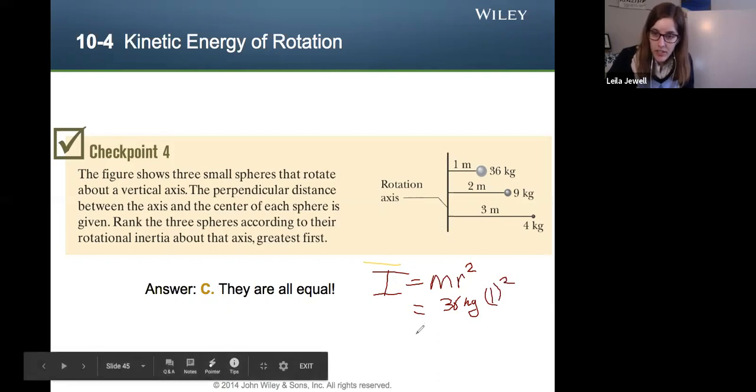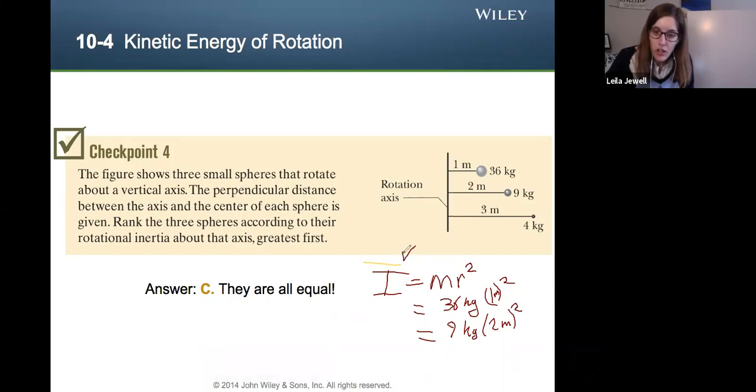We could do the same for the second and third cases. The second case is 9 kilograms times the two meters squared. And then when the two meters is squared, that becomes four meters squared times nine. That's again 36 kilograms times, I should add in my units here. So the units of rotational inertia are going to be kilograms times meters squared.